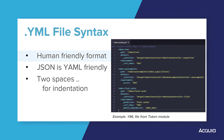YAML is a human-friendly data serialization standard for all programming languages. A superpower of YAML is its compatibility with JSON. Both JSON and YAML aim to be human readable data interchange formats, however they have different priorities. JSON's foremost design goal is simplicity and universality, making it trivial to generate and parse at the cost of reduced human readability. In contrast, YAML's foremost design goals are human readability and support for serializing arbitrary native data structures, allowing for extremely readable files but being more complex to generate and parse. In practice, YAML can be viewed as a natural superset of JSON — every JSON file is also a valid YAML file, making it easy to migrate from JSON to YAML if required.